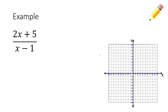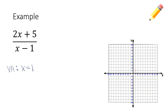Here's our first example: 2x plus 5 divided by x minus 1. First, can I factor anything? No, no factoring available. So I can now identify my vertical asymptote. Remember, the vertical asymptote is found by taking the denominator and setting it equal to 0. So x minus 1 equals 0, meaning x equals 1 is my vertical asymptote. Let's mark that on my graph with a red dotted line — x equals 1 is right here.